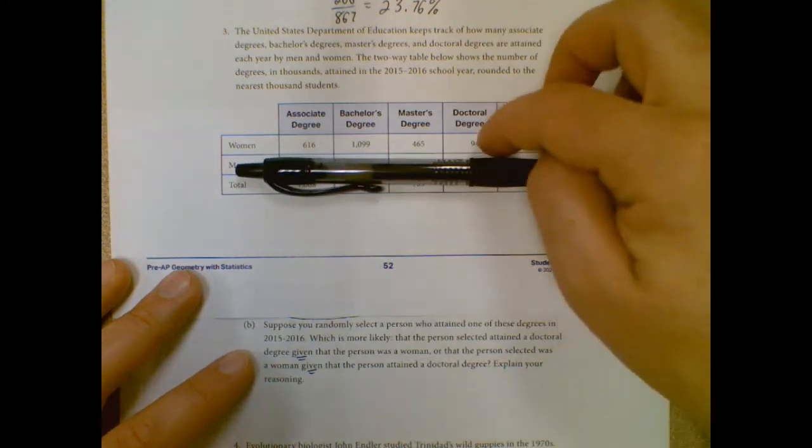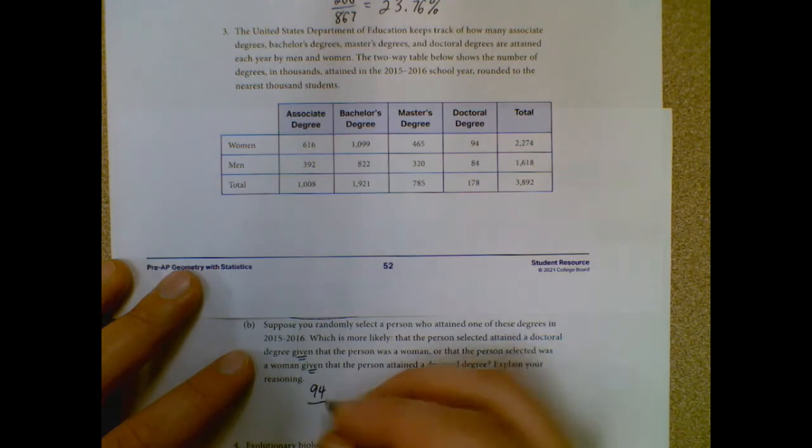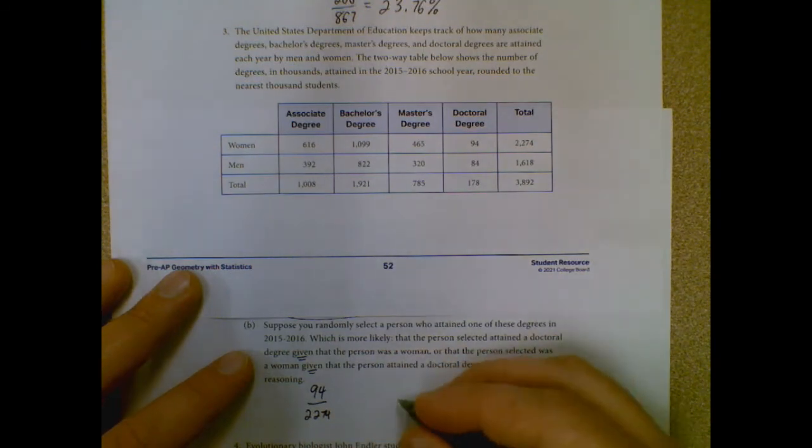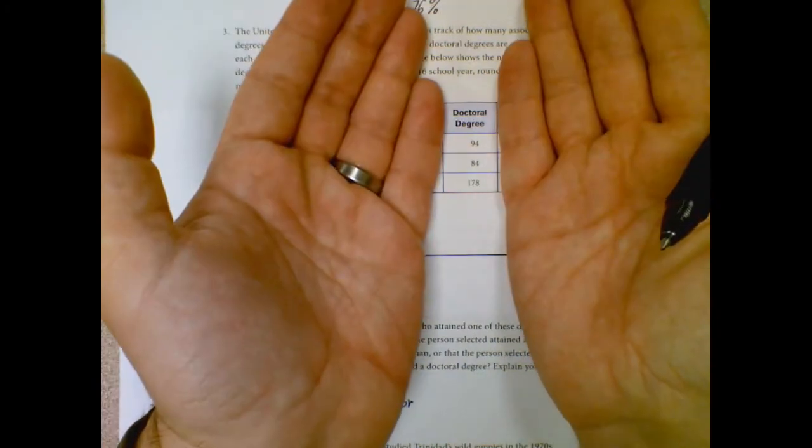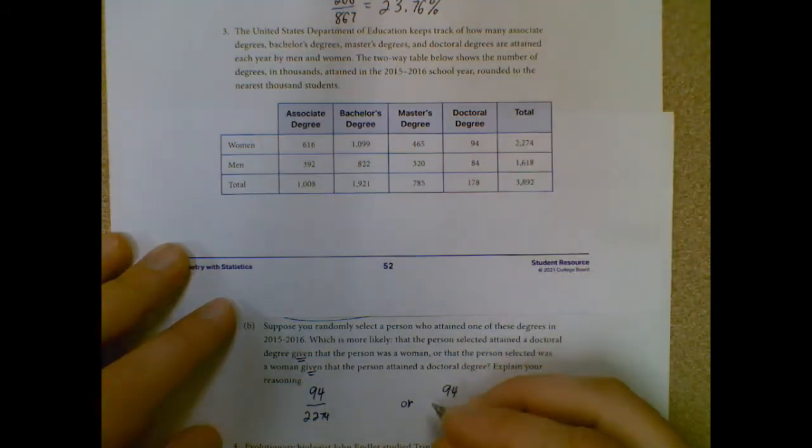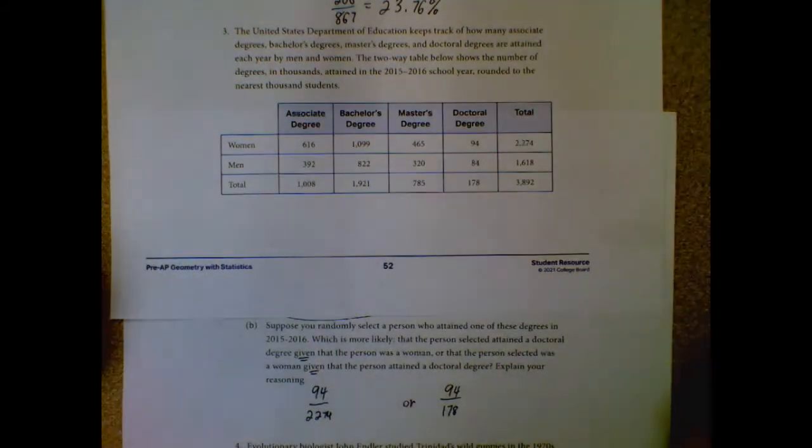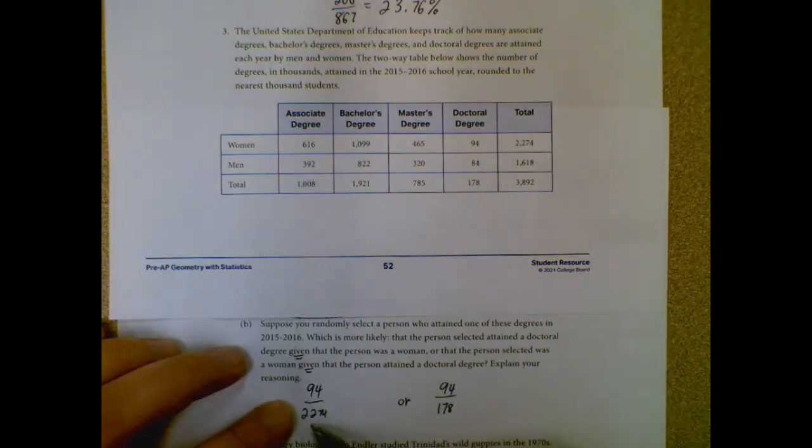So how many doctoral degrees did they give out for the women? That'd be 94 divided by how many women were there - 2274. Or I'm looking at the second one, it's given their doctoral degree, so I'm narrowing it down to my doctoral degree column. It's still 94, but how many doctoral degrees they give out was 178. So if you want to get decimals for this, you can. But I hope that at this point, you can look at this and realize since they're both 94, when you divide by 2274, that's going to be a whole lot smaller than dividing by 178.